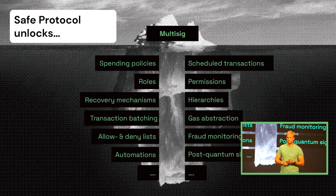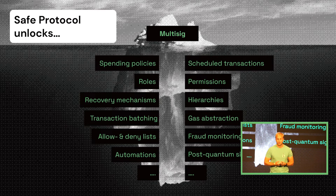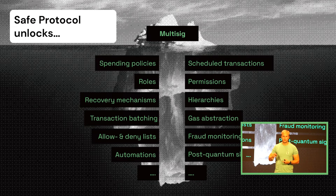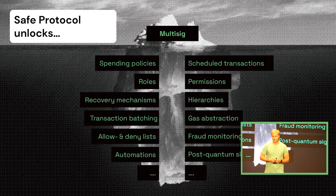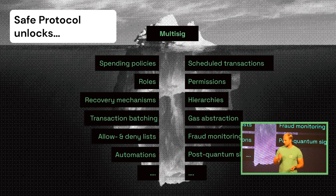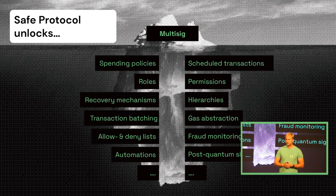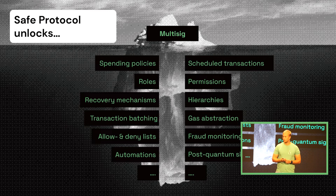More of a UX feature would be transaction batching. If you go to an AMM like Uniswap and do an exchange, usually this involves two user actions: giving an ERC-20 approval to the contract, and then actually executing the swap — meaning you have to go through the wallet signature flow twice. Smart contract accounts allow you to bundle arbitrary amounts of these actions into one transaction, so the user is only bothered once to verify and sign. This enables a lot of UX improvements.